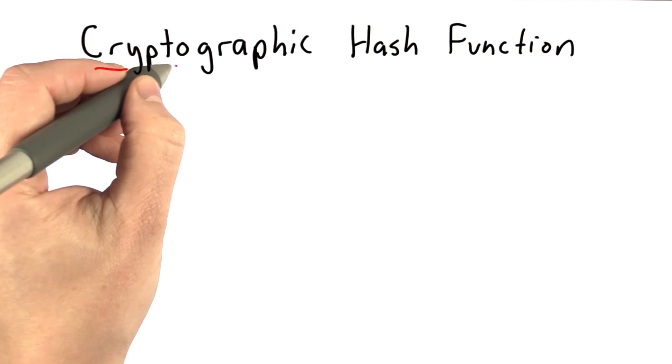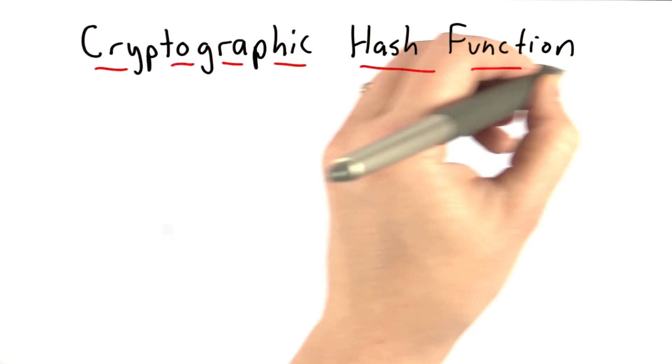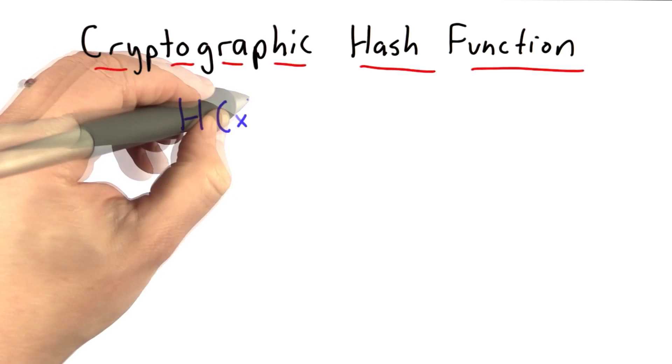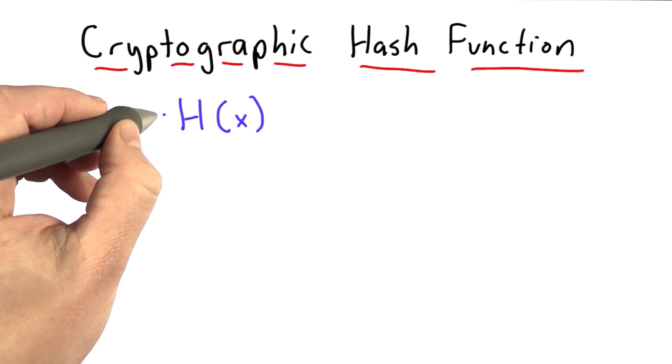What we need for this is what's called a cryptographic hash function. It's a function that has this property that it takes some large value as an input and outputs a small value.